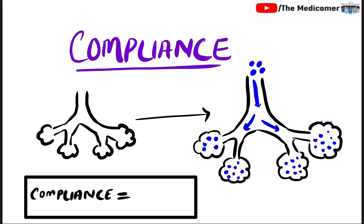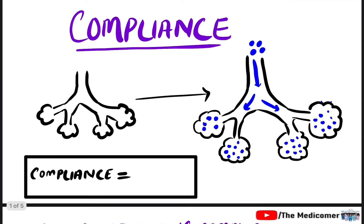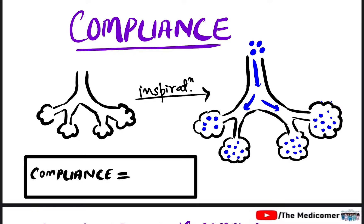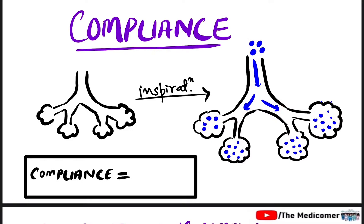In this video we'll talk about the compliance of the lungs. We'll explain it with the help of a simple diagram. This is the diagram of alveoli — this is at rest and this is after inspiration. Once inspiration takes place, there will be entry of air molecules into the respiratory tract and finally into the alveoli, resulting in distension of the alveoli.